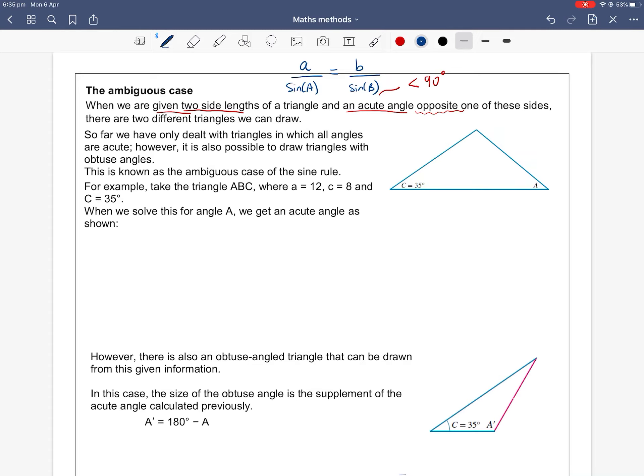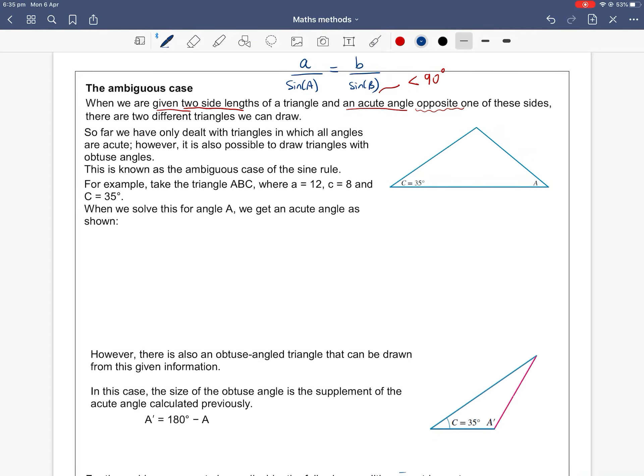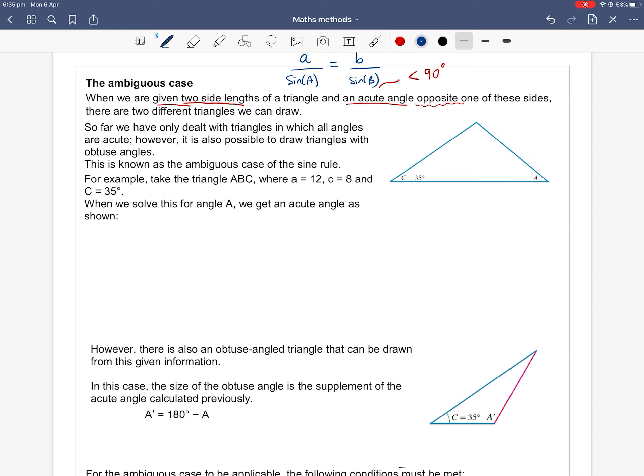How is this possible? Well, let's consider the following scenario. So far we have only dealt with triangles where all the angles are acute, but it is also possible to draw triangles with obtuse angles. Remember, obtuse angles are angles between 90 degrees and 180 degrees. This is known as the ambiguous case of the sine rule.